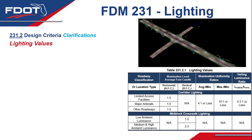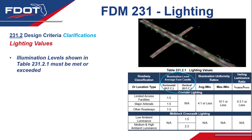Starting off, some policy clarifications were made under the lighting values heading. The illumination levels shown in Table 231.2.1 must be met or exceeded. Generally, when design values are listed, it is implied that they are minimum values to be met, but feedback from the districts indicated some questioning on the intention of these values, so we went ahead and clarified that the values must be met or exceeded.